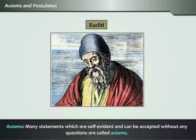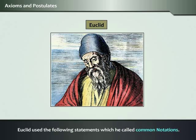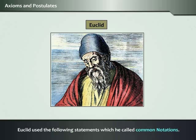Many statements which are self-evident and can be accepted without any questions are called axioms. Euclid used the following statements which he called common notations. Here we will learn about some axioms.